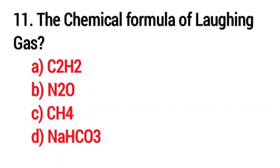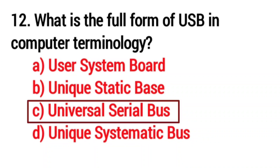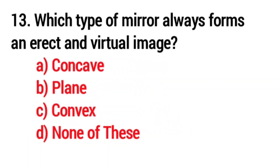Q11. What is the chemical formula of laughing gas? Answer B. N2O, Nitrous Oxide. Q12. What is the full form of USB in computer terminology? Option C. Universal Serial Bus.